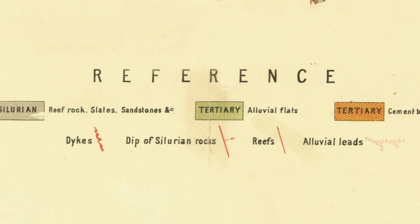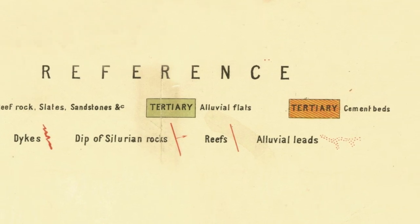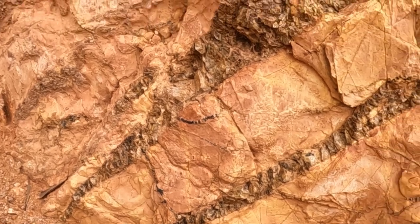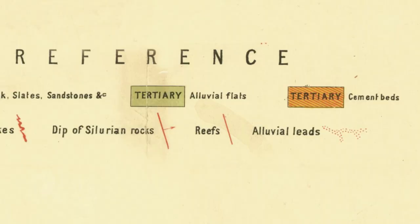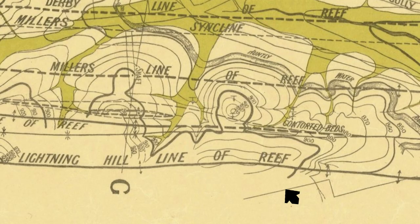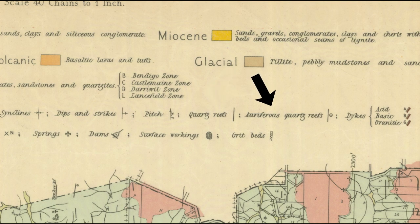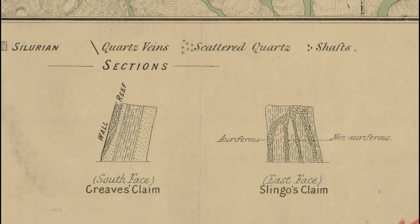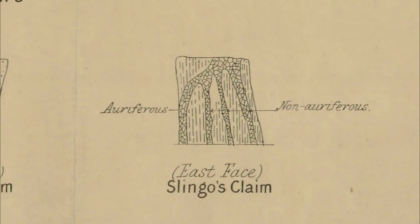Let's move on to another of the main features on historical gold maps: reefs. A reef is a vein of quartz in the ground, sometimes gold-bearing. These can be marked on maps as reef, line of reef, quartz, quartz reef, and auriferous quartz reef. Auriferous means that the reef contains gold, but not all gold-bearing reefs are marked on maps as being auriferous.